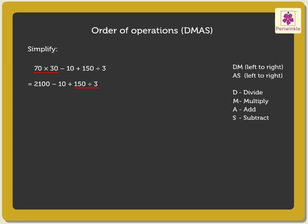Now, divide 150 by 3, which is equal to 50. Now, subtract 10 from 2100, which is equal to 2090.